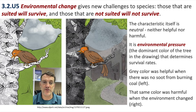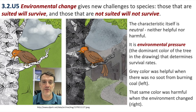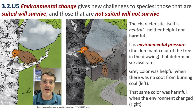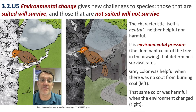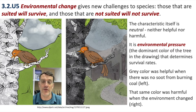The darker-colored moths were now more easily camouflaged, so predators switched from eating the dark moths to eating the light moths. The moths didn't choose to evolve, but the environment changed and applied a new environmental pressure, causing a shift in the gene pool.